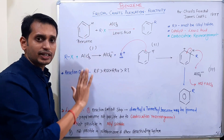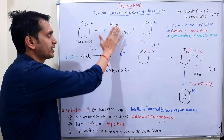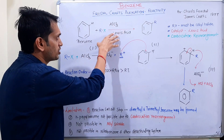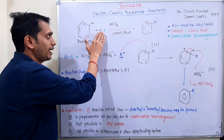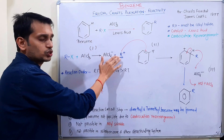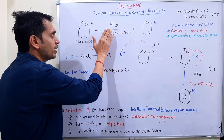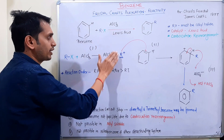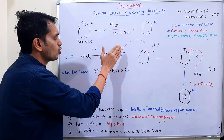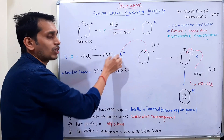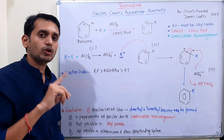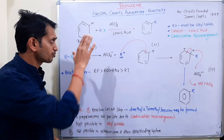Catalyst کی بات کریں: اس میں AlCl₃ ہے جو catalyst کی طرح کام کرتا ہے۔ اس Lewis acid کے presence میں alkyl halide سے carbocation بنتا ہے — یعنی R⁺ کاربوکیشن بنیں گے۔ اس کا مطلب یہ ہے کہ اس میں rearrangement ہوگی — یہ ایک اہم point ہے۔